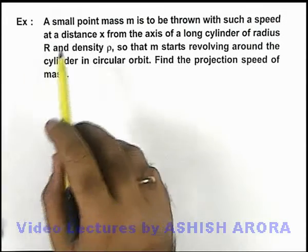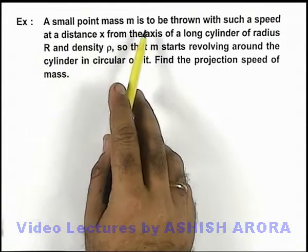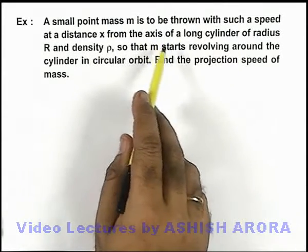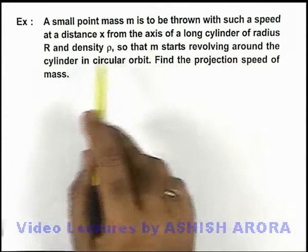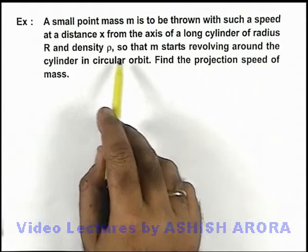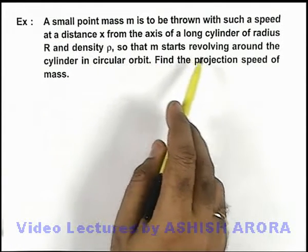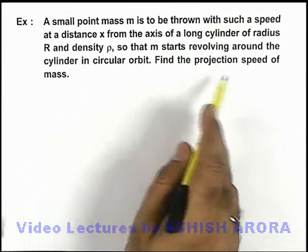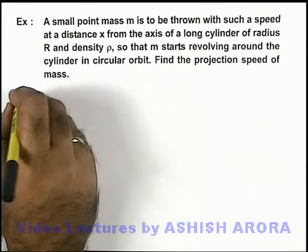In this example, we are given that a small point mass m is to be thrown with such a speed at a distance x from the axis of a long cylinder of radius R and density ρ, so that this mass m starts revolving around the cylinder in circular orbit. We are required to find the projection speed of mass.